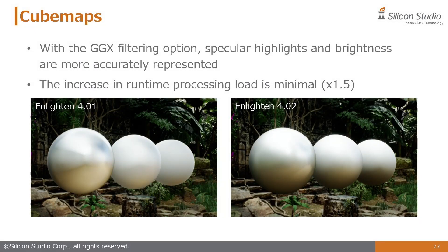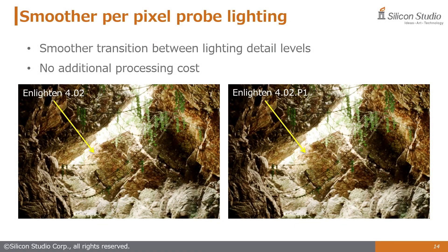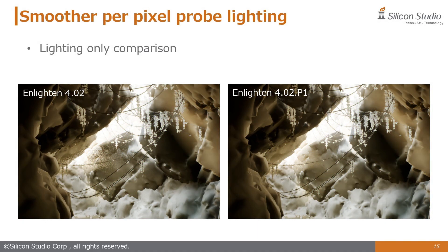The quality of cube maps has also significantly improved due to the addition of a new filtering option. The left image shows the result of applying the conventional box filter, while the right one has the new GGX filter applied. Mipmap generation is also now more physically accurate, especially for materials with higher roughness, resulting in more accurate specular highlights and brightness, though this comes at a slight runtime cost increase. The transition between different probe levels of detail is now smoothed out, and previously visible noise has been replaced by dithering for a much better result, which can be further improved with temporal anti-aliasing.